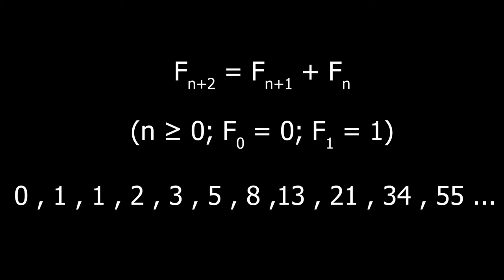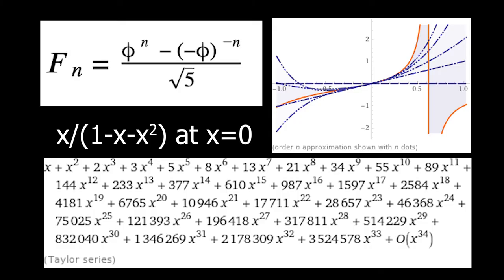For example, the Fibonacci numbers. The relationship f_{n+2} equals f_{n+1} plus fₙ gives the sequence 0, 1, 1, 2, 3, 5, 8, 13, 21, 34, 55, and so on. Now, there are exact formulas for fₙ, but the nth Fibonacci number is the coefficient of x to the n in the expansion of the function x divided by 1 minus x minus x squared as a power series about the origin is also a good answer. More on this later also.